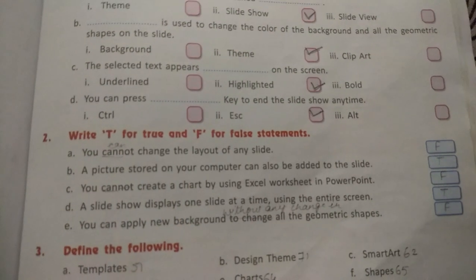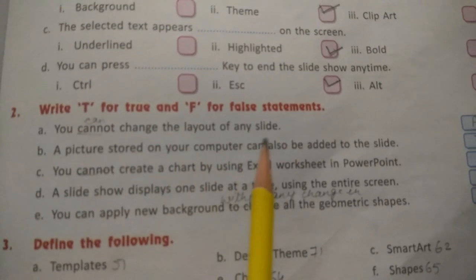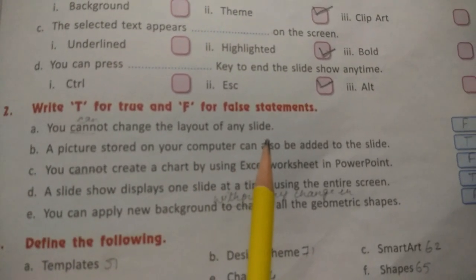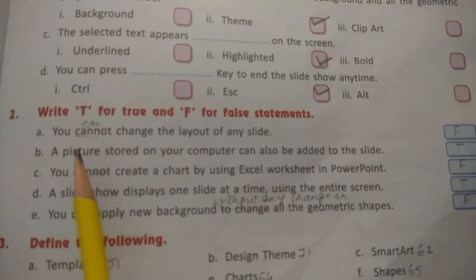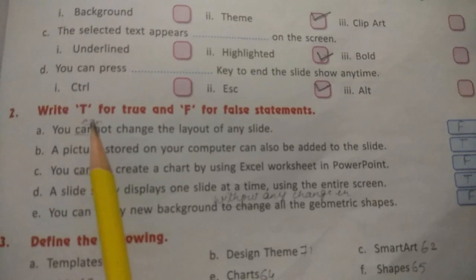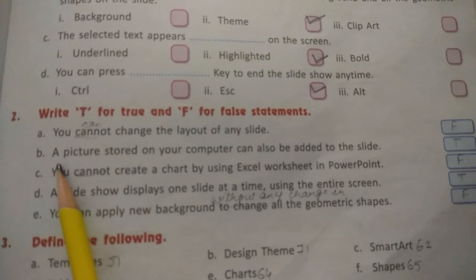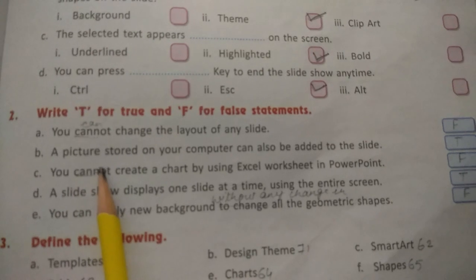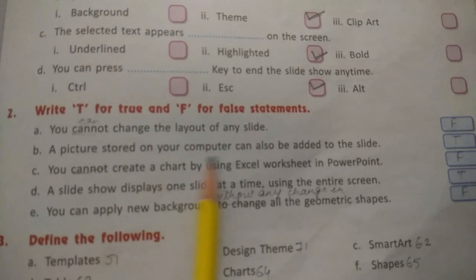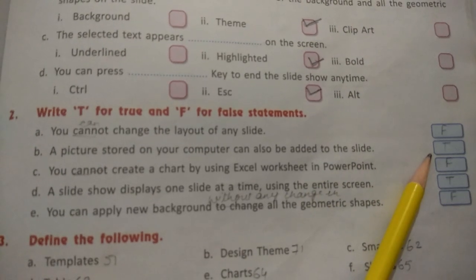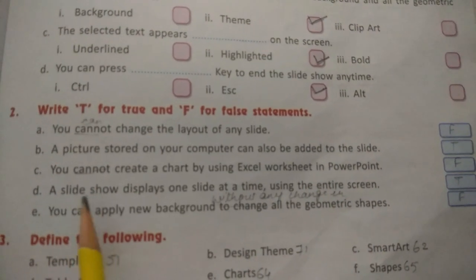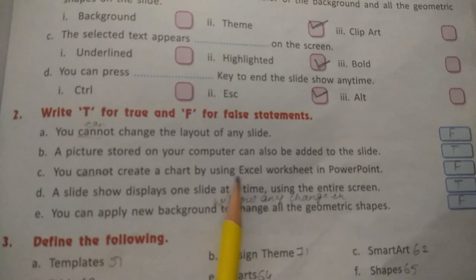Write T for true and F for false. Statement number one: you cannot change the layout of any slide - write down F. For the true statement, underline 'cannot' and write 'can be'. A picture stored on your computer can also be added to the slide - write down T, true. You cannot create a chart by using Excel worksheet in PowerPoint - write down F, false.